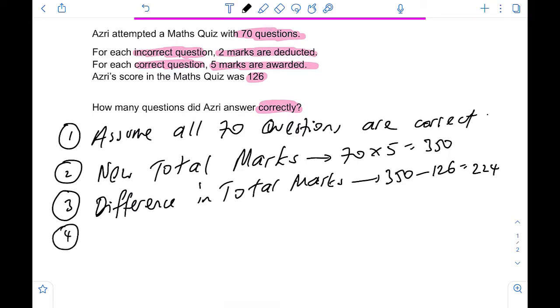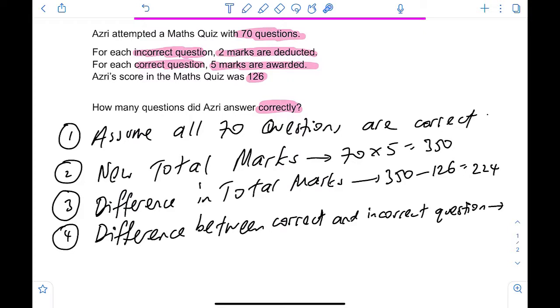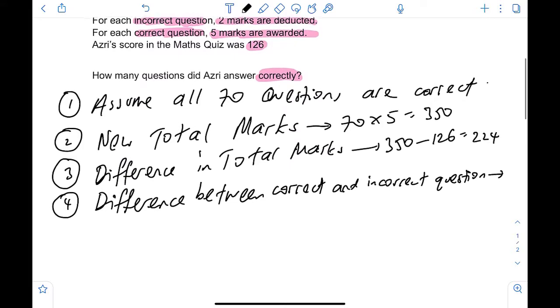Now, step number 4 is the difference between the two options. What are the two options? Between a correct and incorrect. Now, you've got to be very careful here. Usually, we will do a subtraction. But in this case, in the incorrect question, you are taking away two marks. Correct question, you are adding five marks.